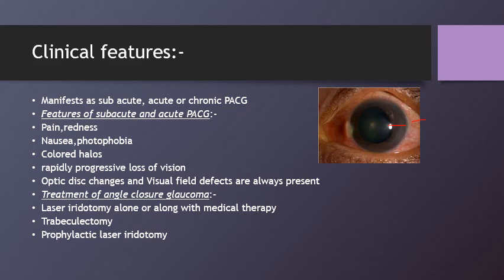Treatment for angle closure glaucoma includes IOP-lowering medical therapy, definitive therapy, and prophylaxis of the fellow eye. Immediate medical therapy includes systemic hyperosmotic agents such as intravenous mannitol at 1 gram per kg body weight, and systemic carbonic anhydrase inhibitors — acetazolamide 500 mg IV stat or 250 mg tablets three times a day. Topical anti-glaucoma drugs including beta blockers, alpha-adrenergic agonists, pilocarpine, and prostaglandin analogs are instilled immediately. Analgesics and anti-emetics should also be given. Compressive gonioscopy with a 4-mirror goniolens can be helpful, and topical steroids are usually given.